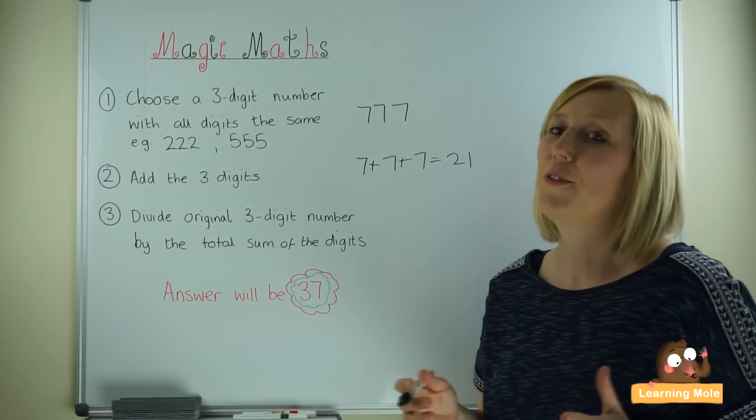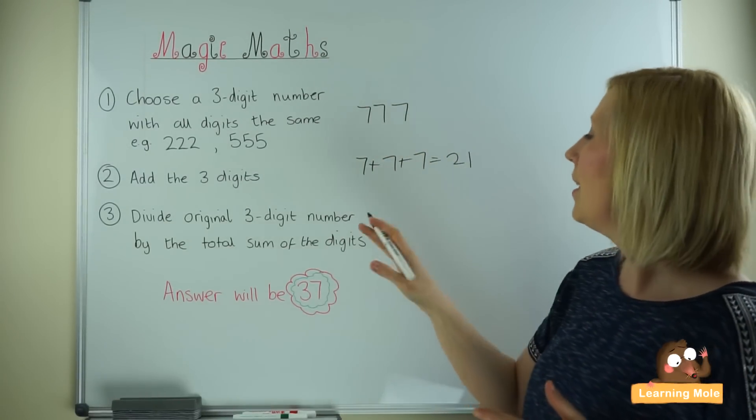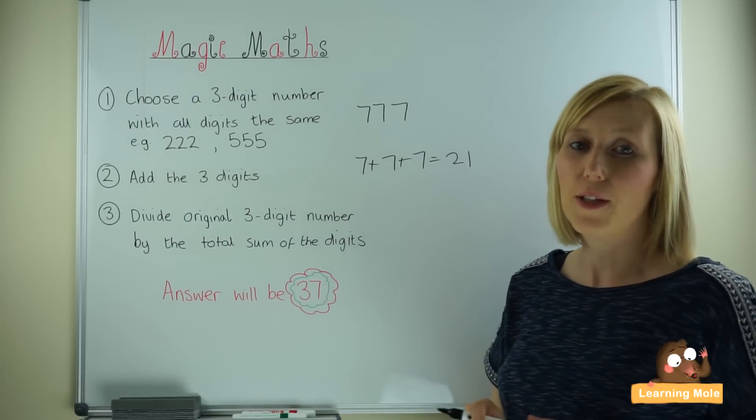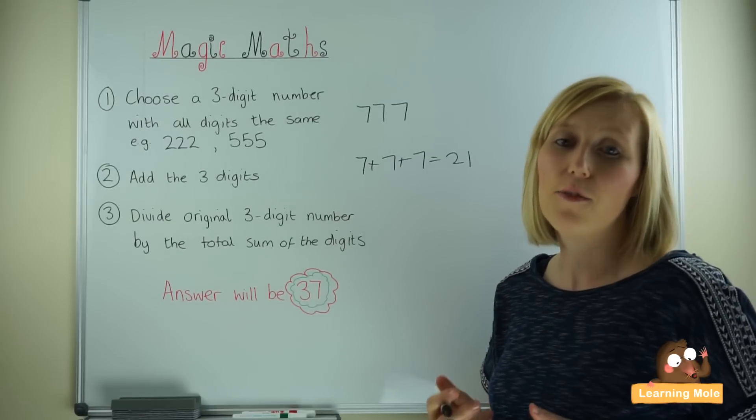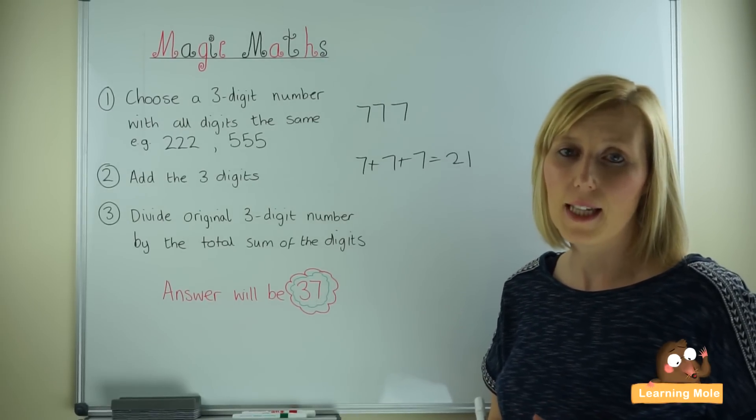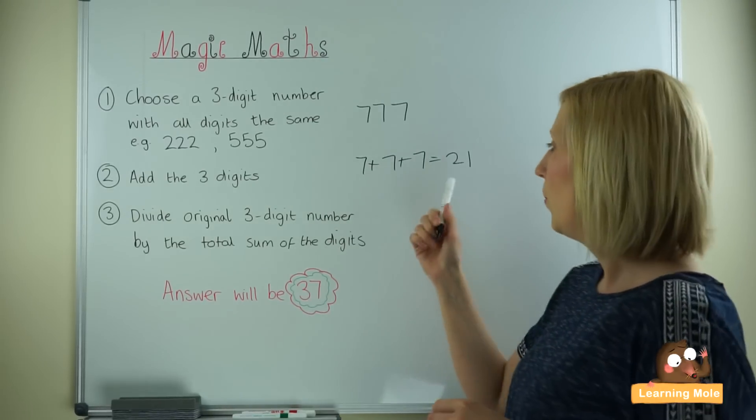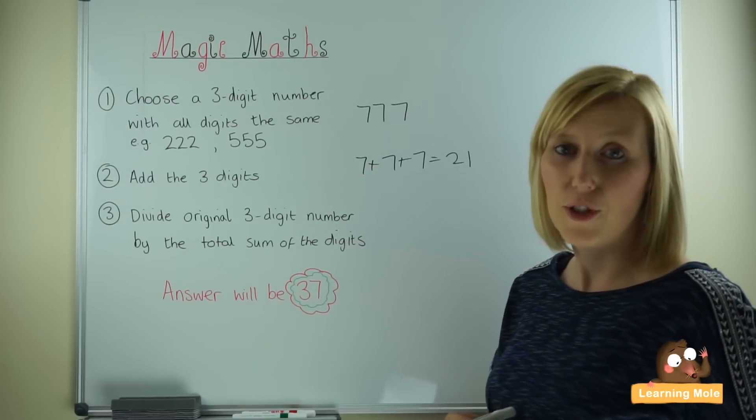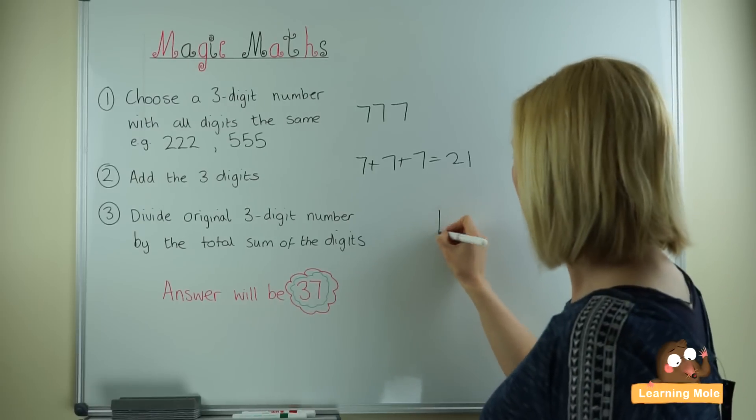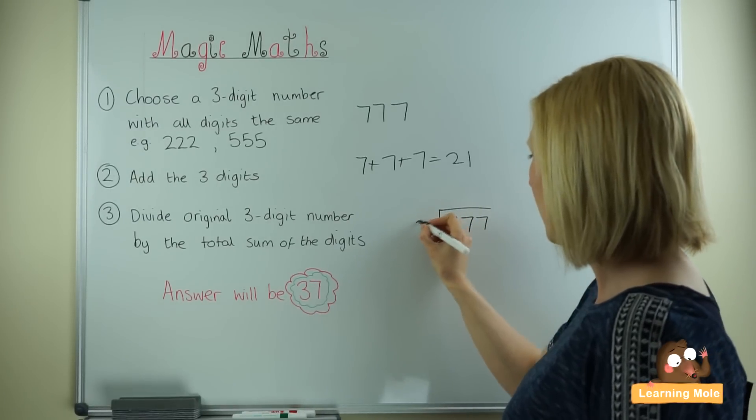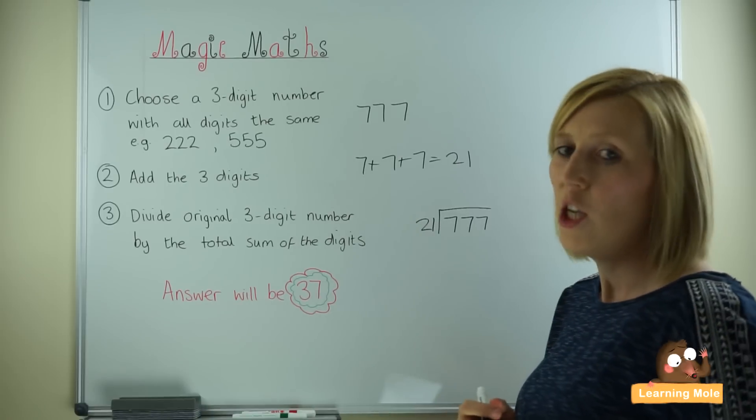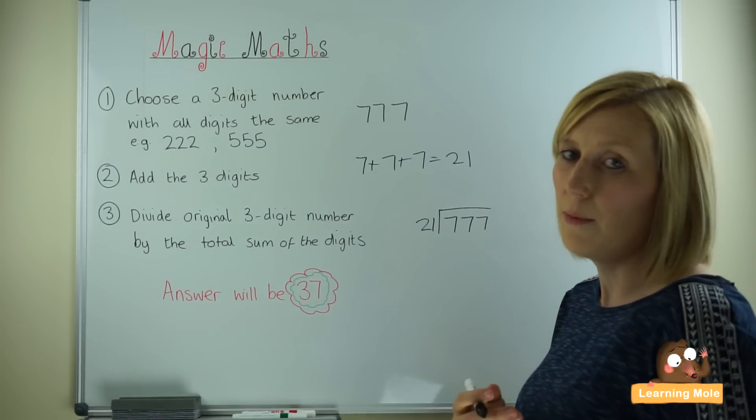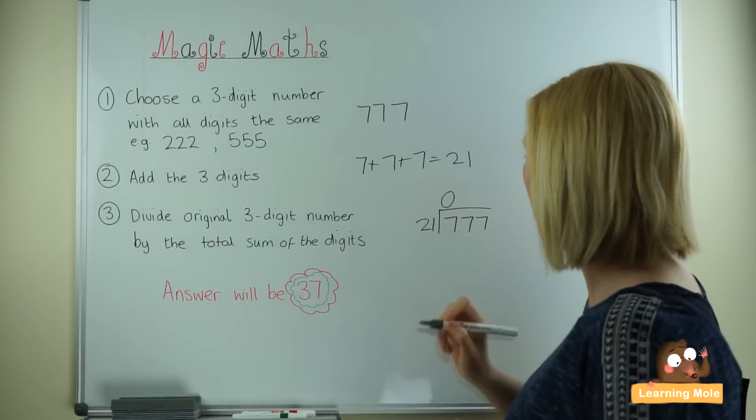Now we want to divide our starting number by the sum of our three digits, so we're going to do some long division - this is a really good opportunity for practicing those division skills. We're dividing a three-digit number by a two-digit number. Lay it out so you've got 777 divided by 21. We start looking at the 7 - of course, 21 cannot go into 7, so that's a zero.